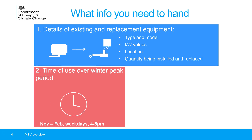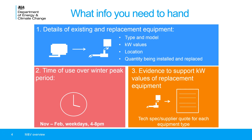You'll also need to know the time of use of your equipment over the winter peak period. The winter peak period is November to February, weekdays 4 till 8 p.m. You'll need to provide the typical operating hours of the equipment included in your project to calculate the peak — or winter peak — savings.